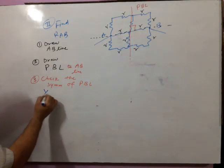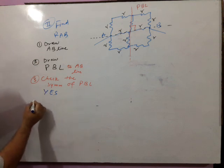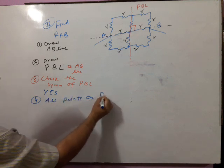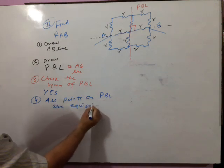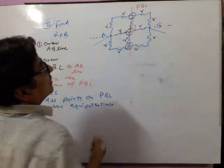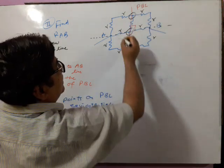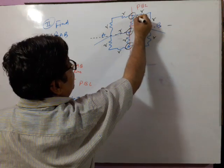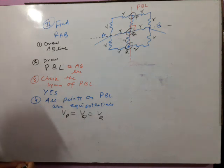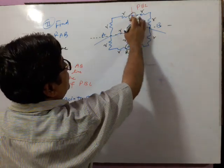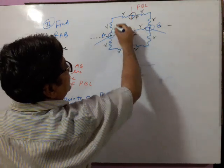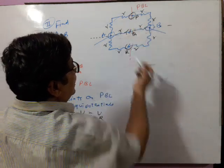If this symmetry is correct, if the PBL line is symmetrical, then all points on PBL are equipotentials — focus on all points: this, this, and this. These three points simultaneously exist on PBL, so these three points P, Q, R are equipotentials: potential of P equals potential of Q equals potential of R. Now, if these potentials are equal, these resistances will not work. Between external junctions A and B, these are in series, these are in series, these are in series — then all three branches in parallel.